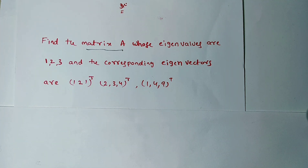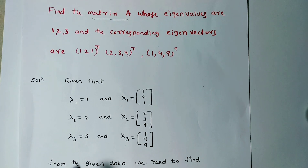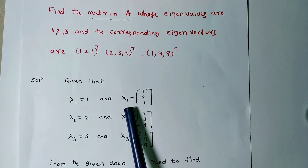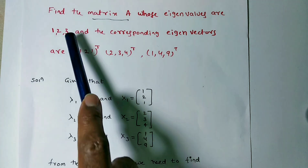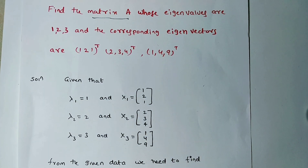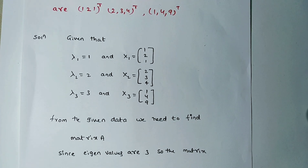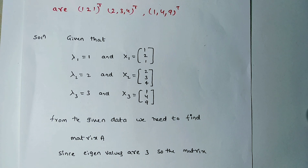In the first method, the given information includes λ1, λ2, λ3 and their corresponding eigenvectors x1, x2, x3. From this data we need to find matrix A. Since there are 3 eigenvalues, the order of matrix A is 3 — it has 3 rows and 3 columns. Consider the unknown matrix A with elements A11 through A33. There are 9 unknowns to find.